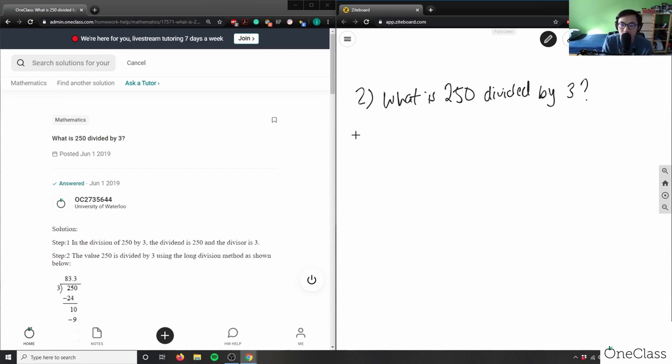What we have to do is the long division method. 250 divided by 3 - division means we're doing the operation of division. We have 250 which is the dividend that goes inside this bracket, and the divisor is 3. We're trying to find the answer which is the quotient.